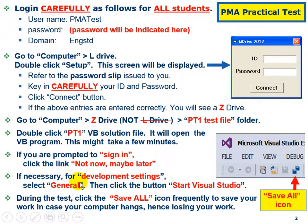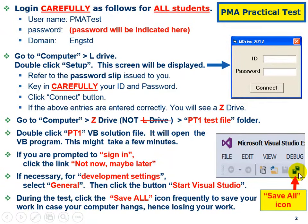When you launch the Visual Basic software, it might prompt you to select the development setting. When you see this, select 'General Development Setting,' then click the button 'Start Visual Studio.' Also, very importantly, remember to click 'Save All' frequently to save your work — in case the computer hangs, you won't lose your work and have to redo everything.